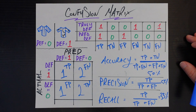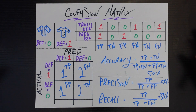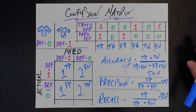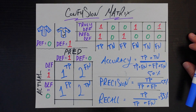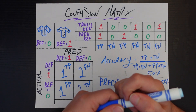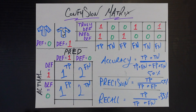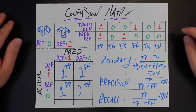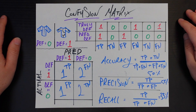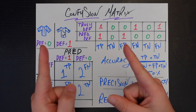So that's all I really have to say about the confusion matrix. You'll see it come up a bunch, especially in binary and multi-class classification problems. If you have any questions or comments at all, please leave them in the comments section below. Thank you for watching. Like and subscribe for more videos just like this, and I'll see you next time.